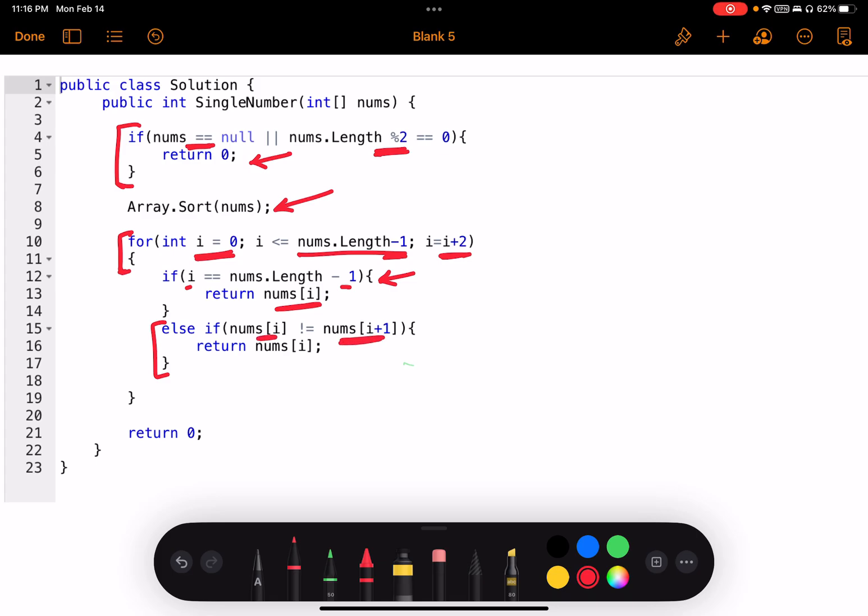If that is not true, then I am comparing the value at i with the next value in the array. If the two values do not match, then I am returning nums[i] as it is going to be unique.